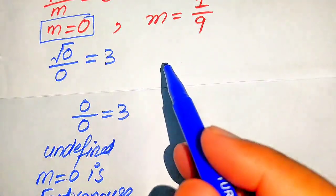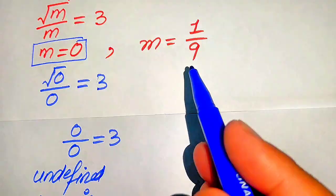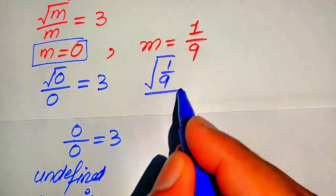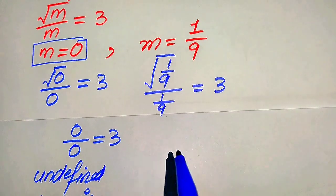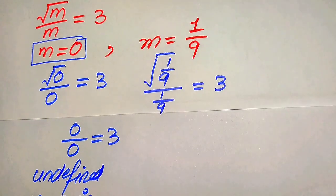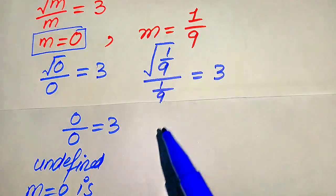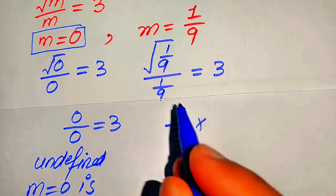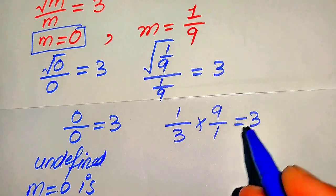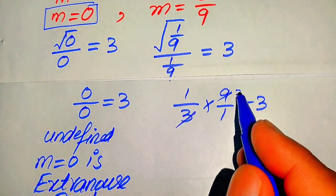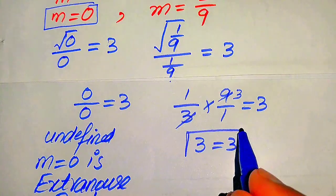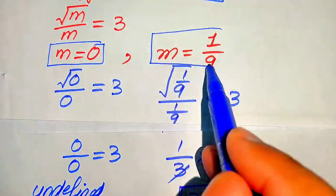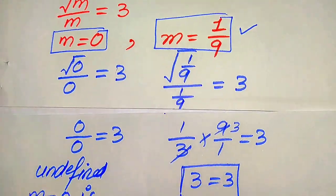Now we verify the second root, m equals 1 over 9. Substituting gives square root of (1 over 9) divided by (1 over 9) equals 3. The square root of 1 is 1 and the square root of 9 is 3, and simplifying the fraction gives 3 times 3 equals 9 over 1, which becomes 3 equals 3. This confirms that m equals 1 over 9 satisfies the given equation, so m equals 1 over 9 is the solution.